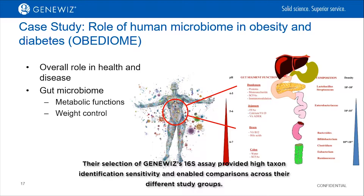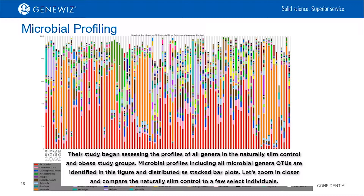Their study began by assessing the profiles of all genera in the naturally slim controls and obese study groups. Microbial profiles including all microbial genera OTUs are identified in this figure and distributed as stacked bar plots. Let's zoom in closer and compare the naturally slim control to a few select individuals.